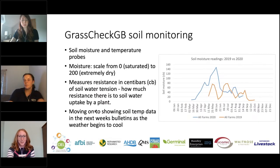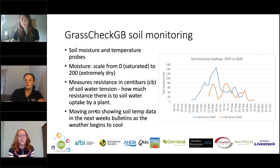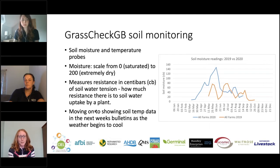Since we're talking about soils today, I wanted to run through the soil monitoring we have as part of this project. All of our farms have soil moisture and temperature probes fitted. The moisture scale runs from 0 to 200, with 0 being saturated soils and 200 being extremely dry. The units are centibars and they effectively measure the resistance to soil water uptake by plant roots. Through the peak of the season we've been showing soil moisture readings in the weekly bulletins, and in the next couple of weeks we'll move on to showing soil temperature data, as soil temperature becomes a limiting factor for grass growth at this time of year.